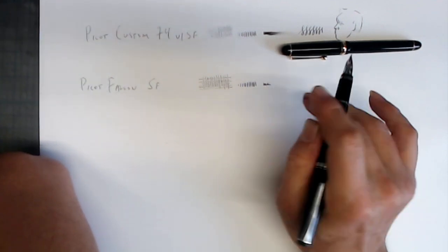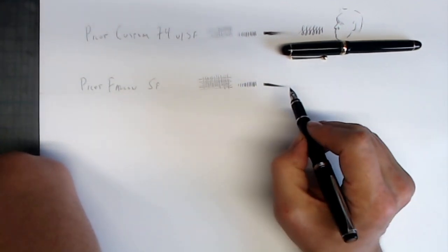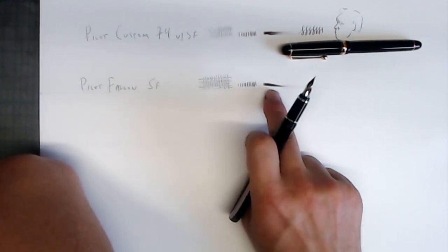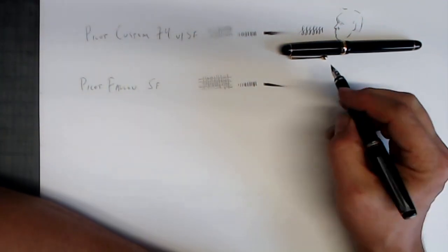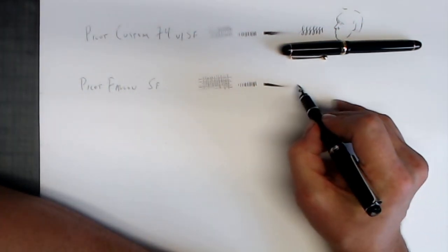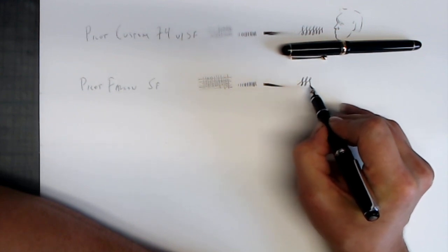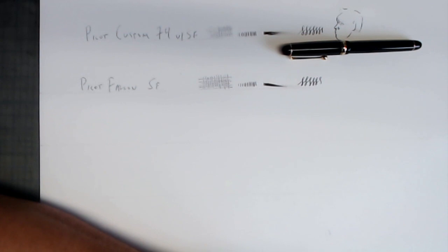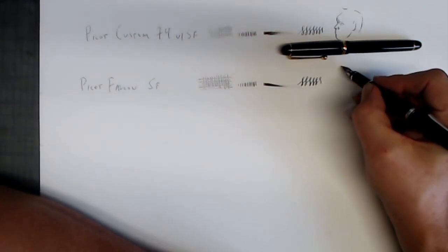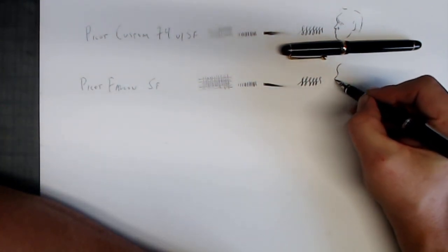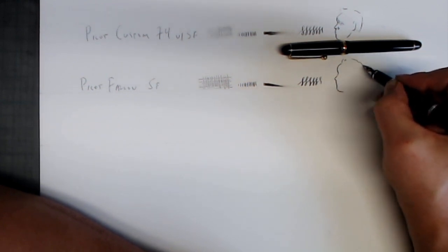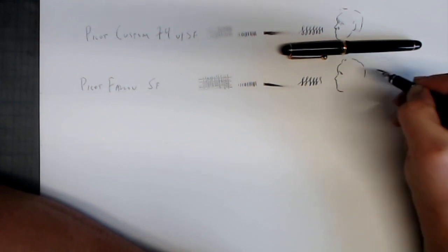Alright, now let's do the wetness test here. I can put down a little bit more ink. This is generally a wetter writer. It puts down a little bit more ink than the Custom 74, which runs a little bit dry. Let's do our figure eights. And let's do a little doodle here, where I'm trying to employ line variation. So you can see the line is thicker with the Pilot Falcon.